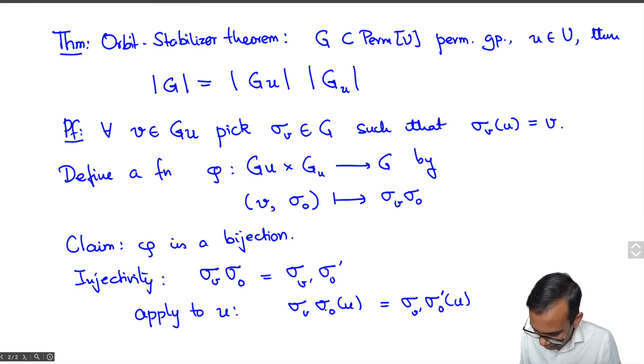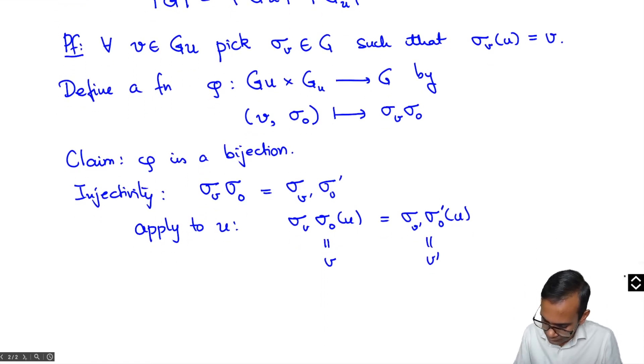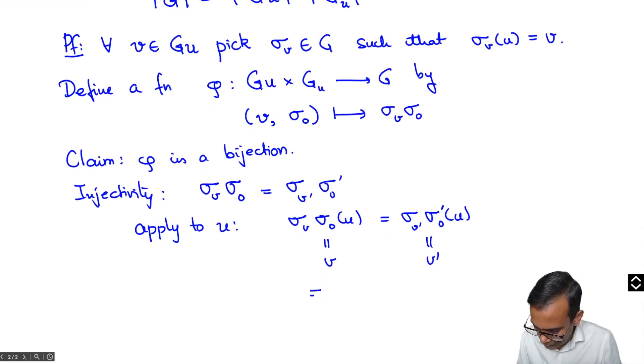And so what we get here is U and then the sigma V of U but we know that sigma V of U is V and sigma V prime of U is V prime. And so because these are equal this must imply that V is equal to V prime.